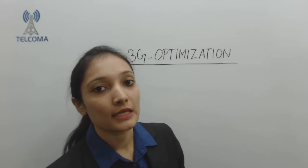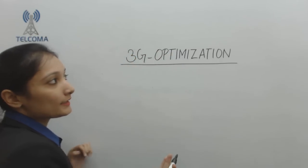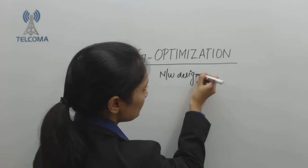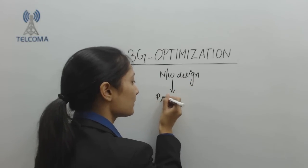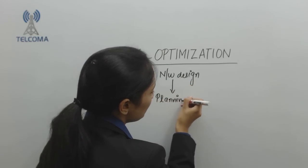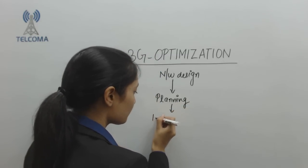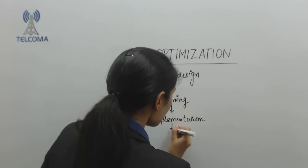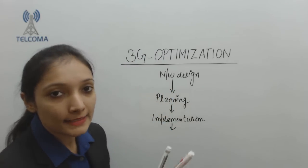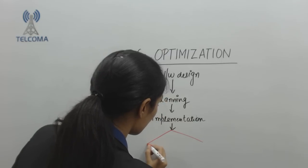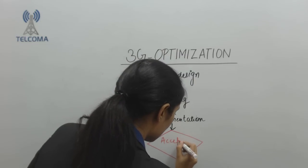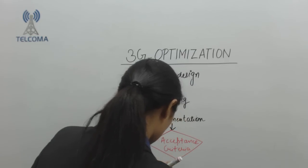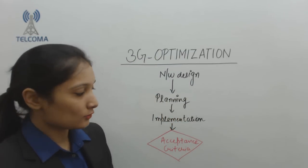Looking at the optimization phase of a network: first we have network design, then planning, then implementation of the network. After that we check whether acceptance criteria are met or not. If the acceptance criteria are not met, the process begins again — this is considered the pre-optimization phase.